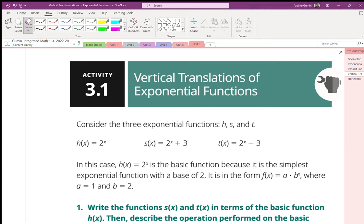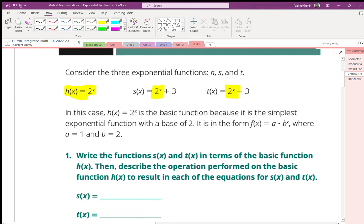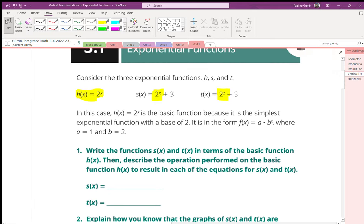Now check it out. h is 2 to the power of x, which exists in s and in t. So let's write that in h of x form. s of x took our original h of x and has a plus 3 on the outside. Our t of x takes our original h of x and subtracts 3 from the outside.